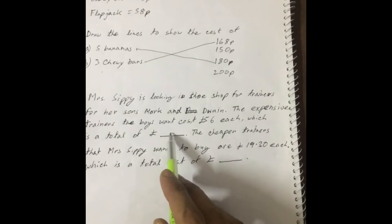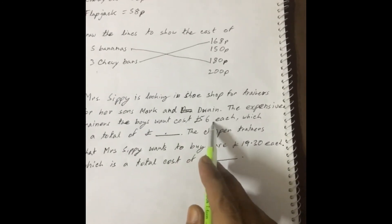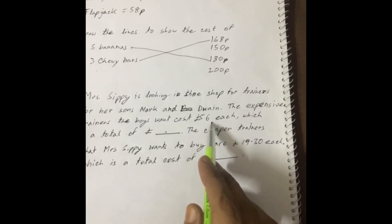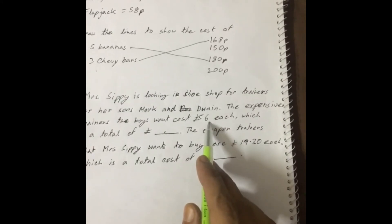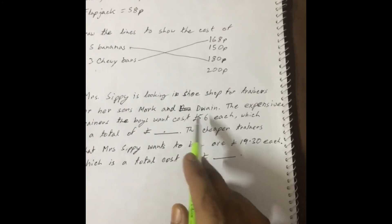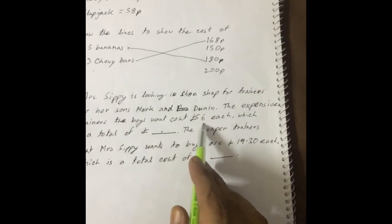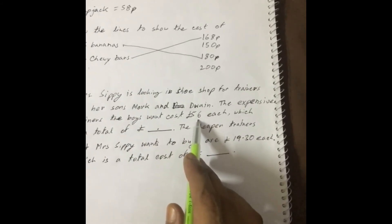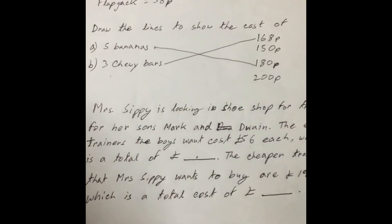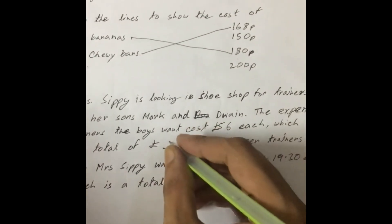So the expensive ones cost 56 each. We multiply by 2 because she wants 2 pairs for her sons Mark and Devane. 56 into 2 is 112, so we write 112 as the total.